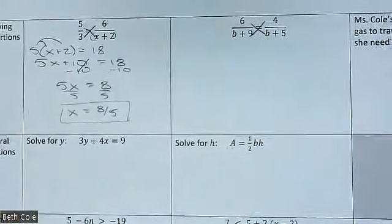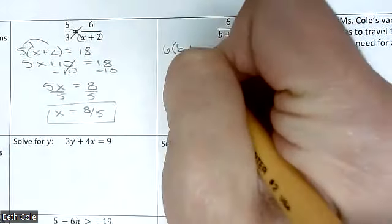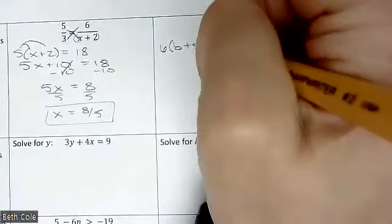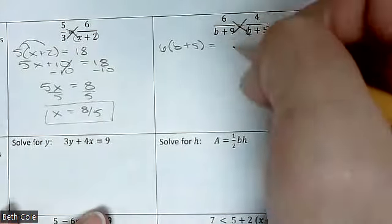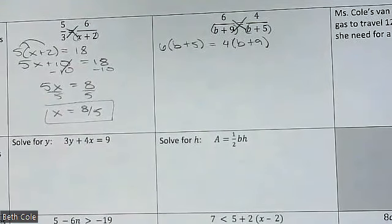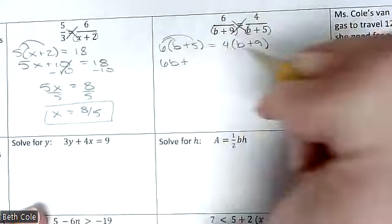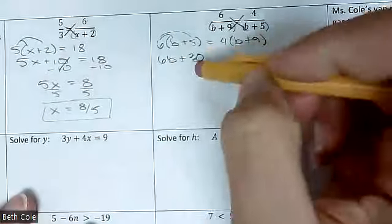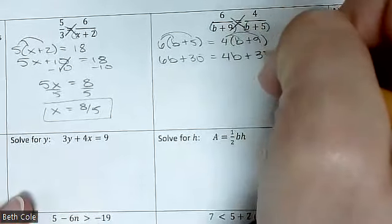All right, and then this one — go ahead and draw your X. You're going to need some parentheses: it's going to be 6 times parentheses b plus 5. Put parentheses around that, and then what comes next? Equals — sorry, people leave out the equals. And then you'd have 4 times parentheses b plus 9. From there you're going to just solve it — you do need to distribute on both. So it would be 6b plus 30 equals 4b plus 36.